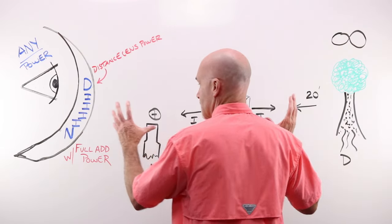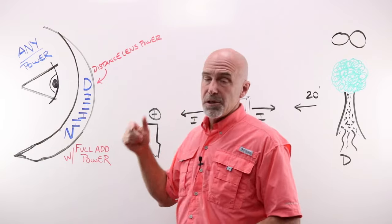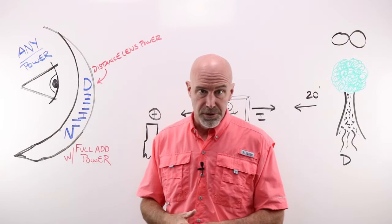So, the concept of a progressive lens, distance, a building of power and intermediate to the full near, which includes your full add power. Next, I'm going to turn this lens. So, we're going to look at it straight on and talk a little bit about that corridor that I just mentioned.